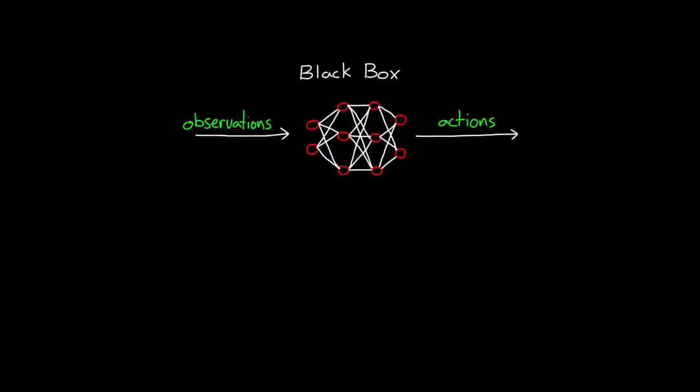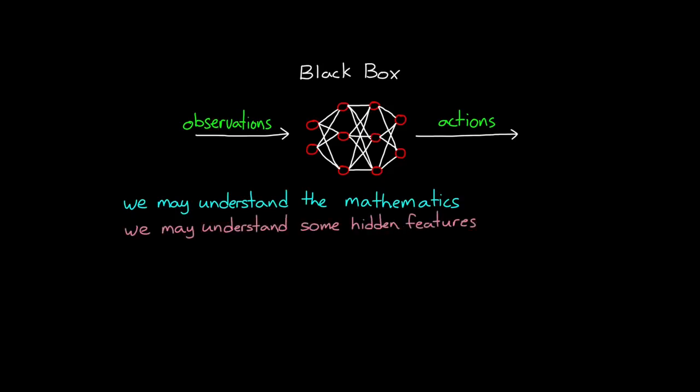This function is essentially a black box to the designer. Now we may have an intuitive sense of how this function operates, the mathematics that convert the observations to actions, and we may even understand some of the hidden features that this network has identified. However, we don't know the reason behind the value of any given weight or bias. So if the policy doesn't meet a specification, or if the plant or the rest of the operating environment changes, how do you adjust the policy to address that? Which weight or bias do you change?